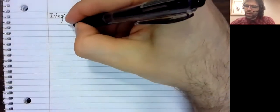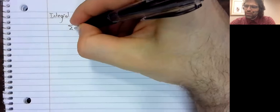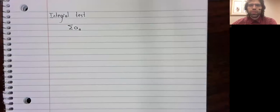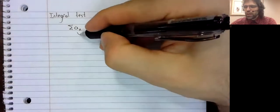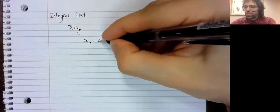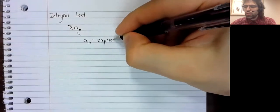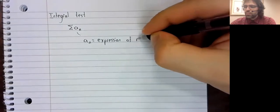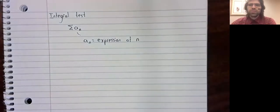Suppose you have an infinite series whose convergence or divergence you're attempting to establish. And as is usually the case, the terms of this series are given by some explicit formula.